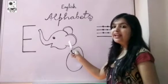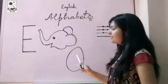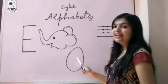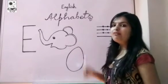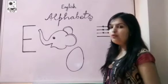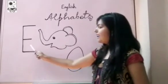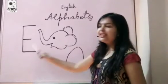E. Elephant. E. Egg. We have learnt the sound of alphabet E.